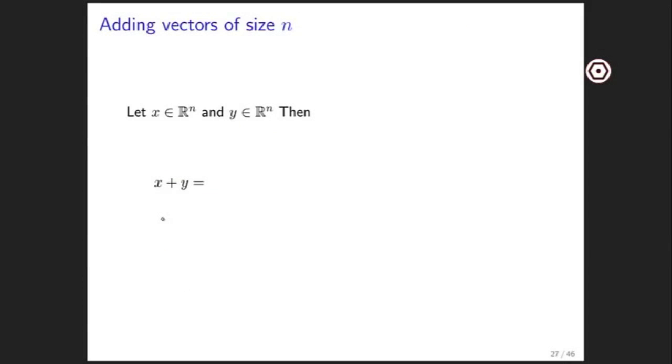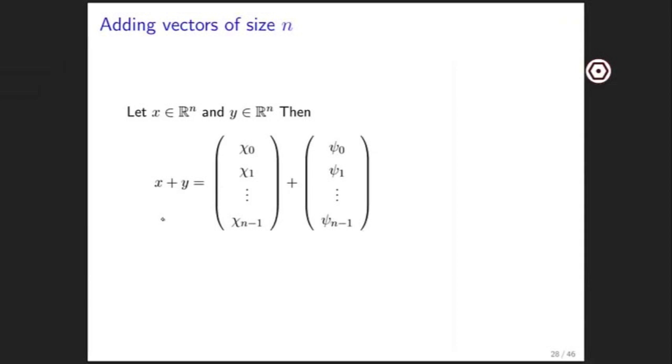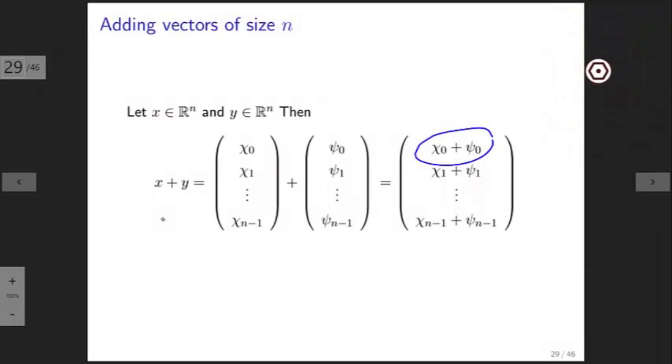Now if we look at this more generally, where we have two vectors x and y of size n, then if you do x plus y, you look at the separate components of x and y, and all you need to do is add the corresponding components together to come up with the vector x plus y.